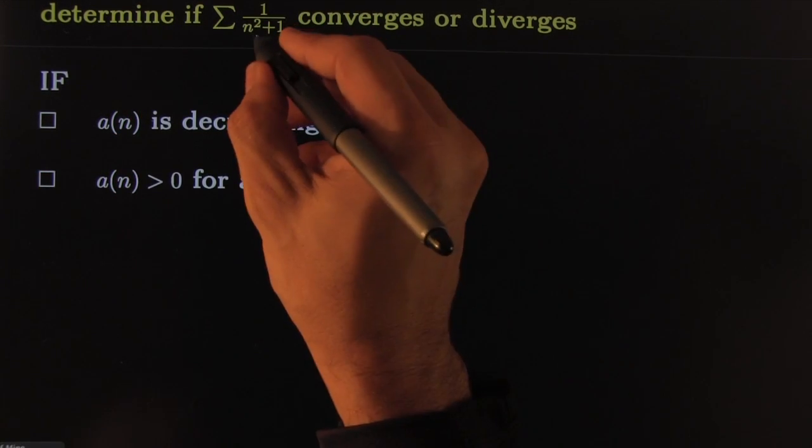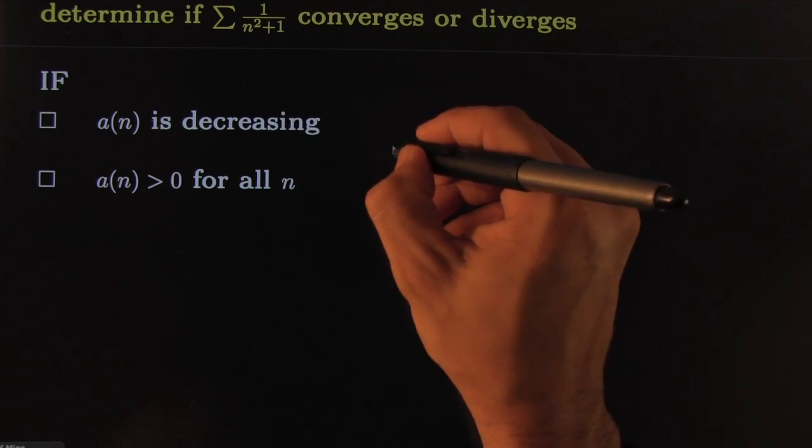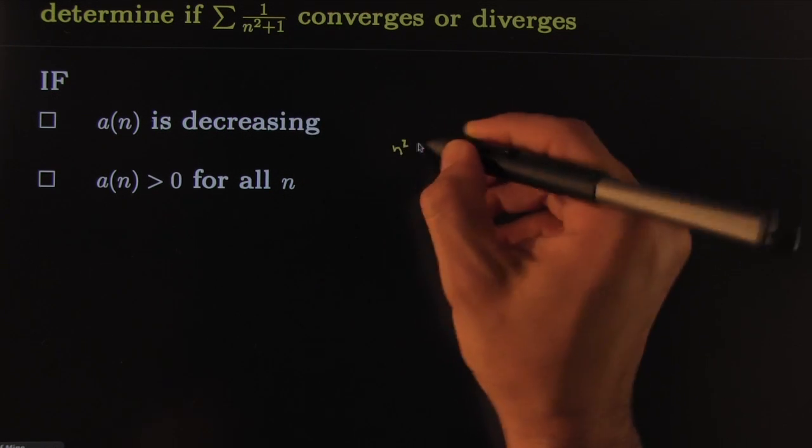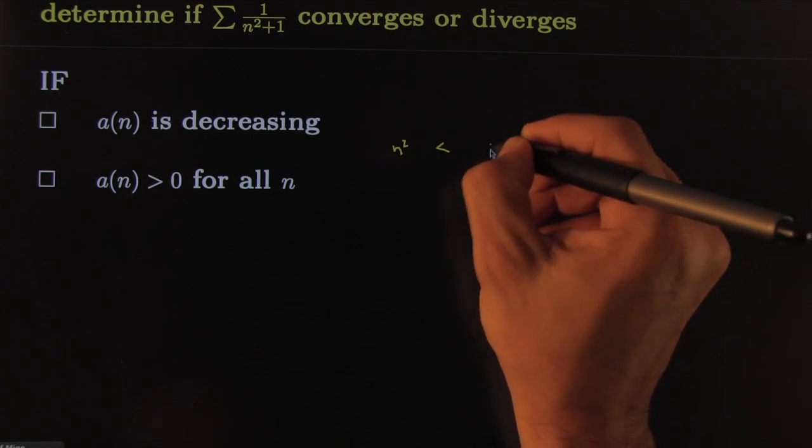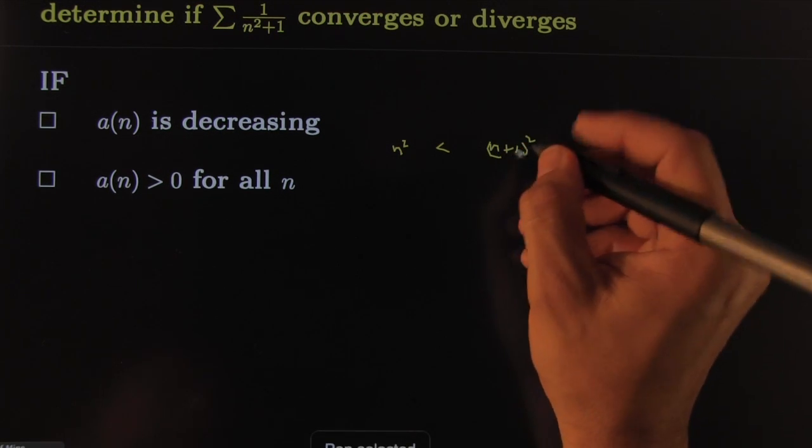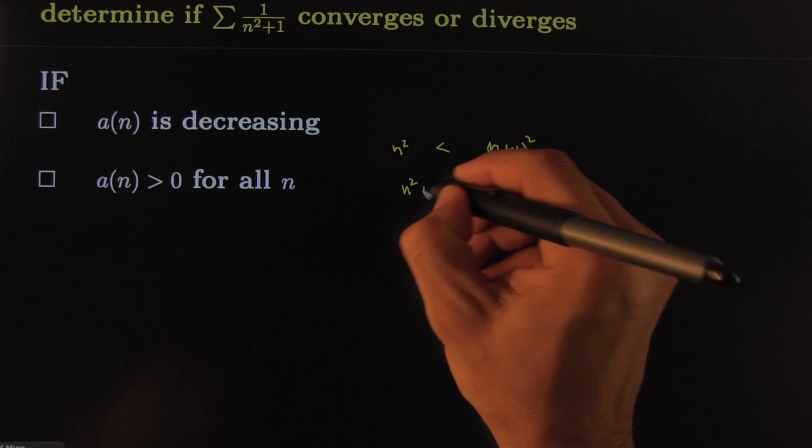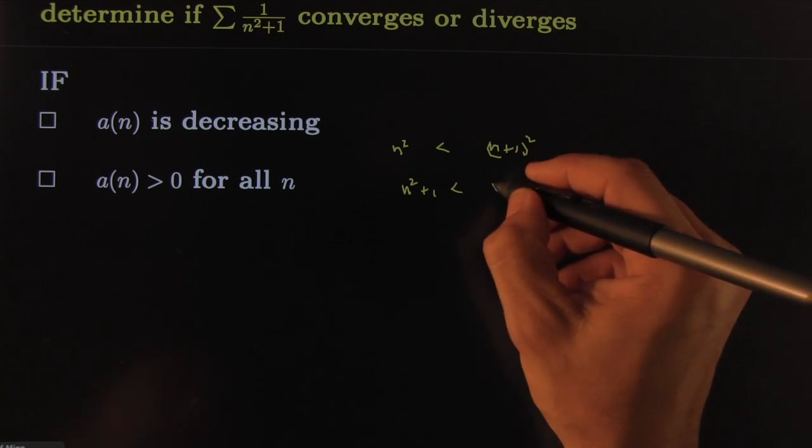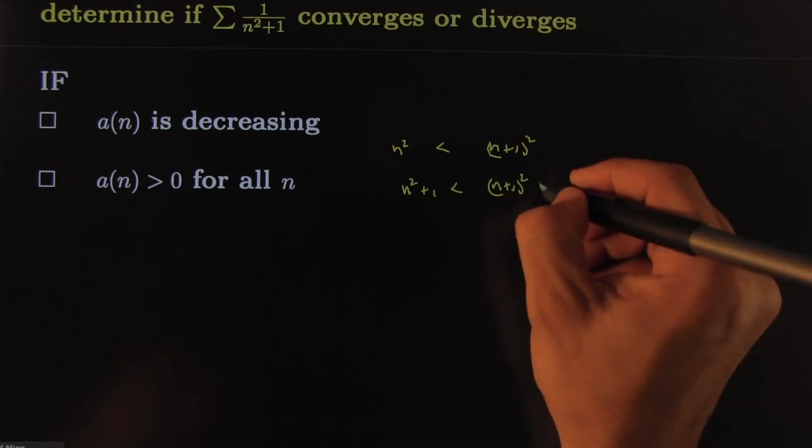To show it's decreasing: clearly n squared is less than (n+1) squared. Let me be more careful this time. Therefore, n squared plus 1 is less than (n+1) squared plus 1.